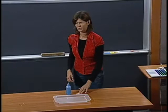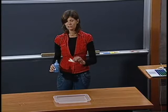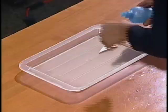So that was easy. You just had to put a little bit of soap on one side of the boat, and actually the boat was pulled towards the other side. This is because the soap is reducing the surface tension.